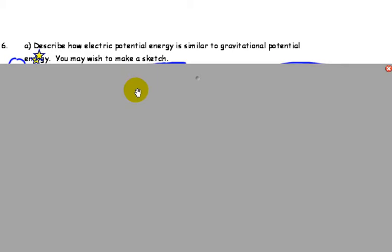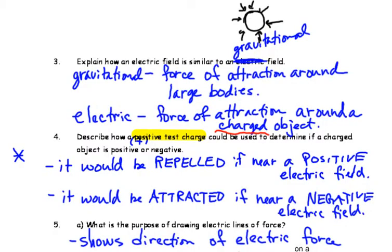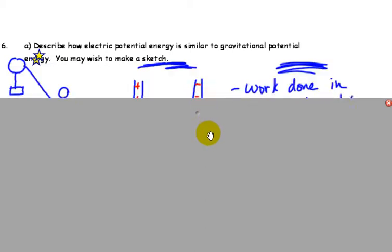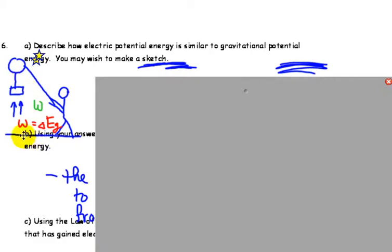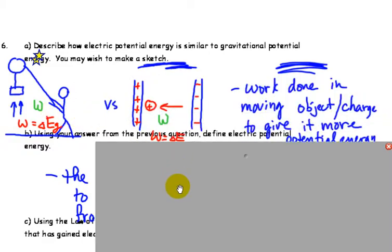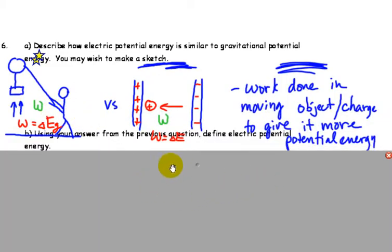Describe how electric potential energy is similar to gravitational potential energy. So, again, we can kind of relate this to gravity. If I look at this, if I have a guy lifting up a box, doing work, I'm increasing the gravitational potential energy of that object. Because, if I was to let it go, that potential would change into kinetic, and it would fall back down.